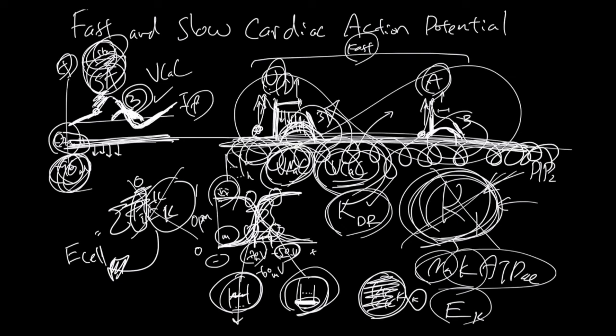So in summary, fast is fast because it has this ready voltage-gated sodium channel. Slow is slow because it doesn't have IK1.